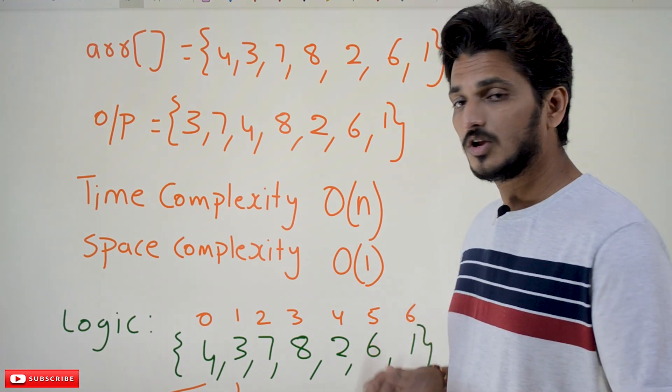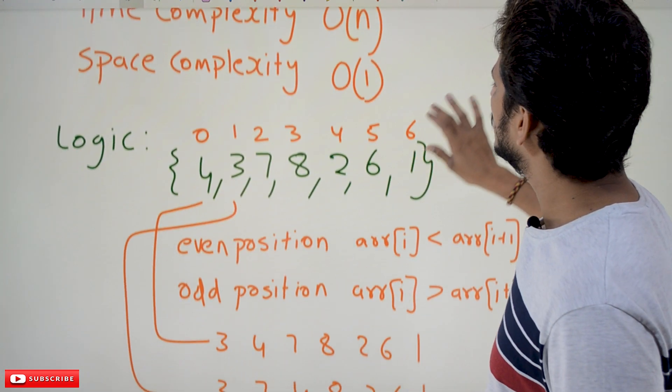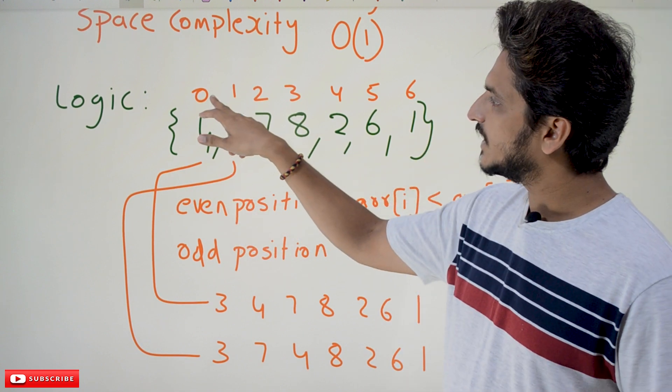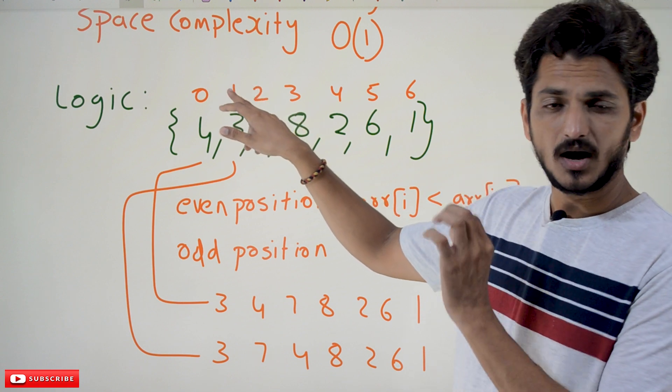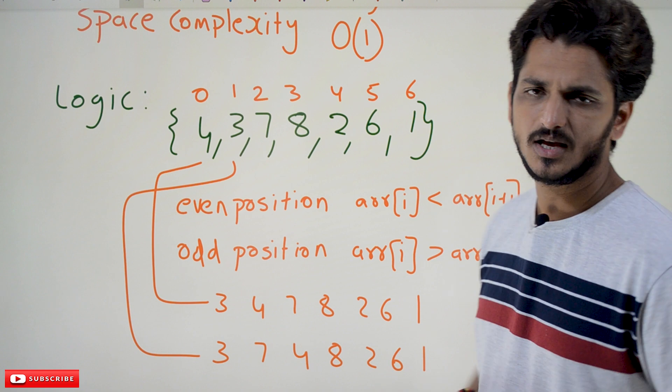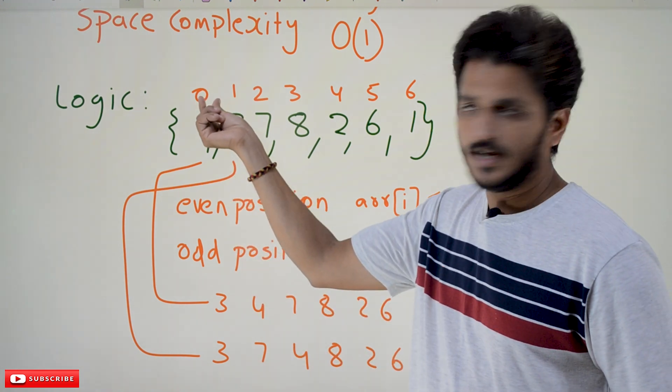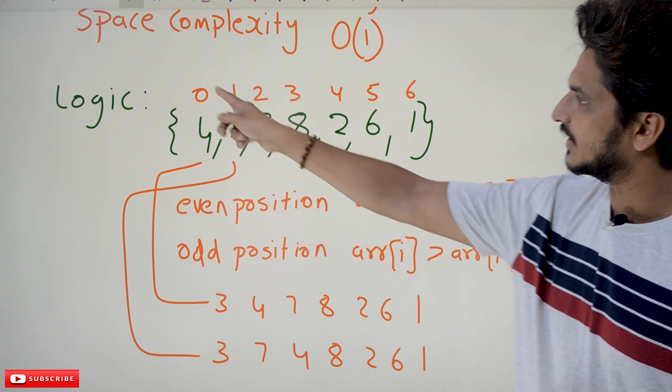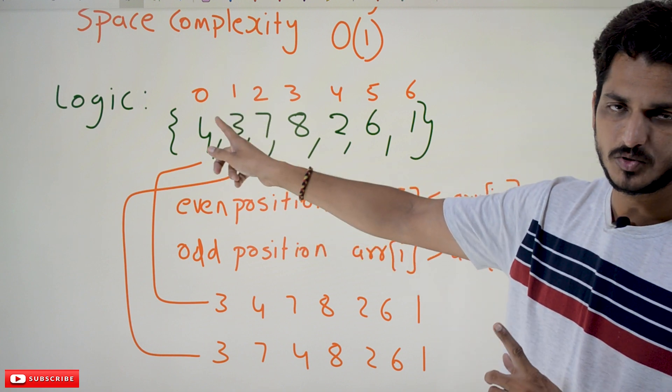So coming to the logic part, it's very simple. 4, 3, 7, 8, 2, 6, 1. For understanding purpose we have written the index values 0, 1, 2, 3, 4, 5, 6.